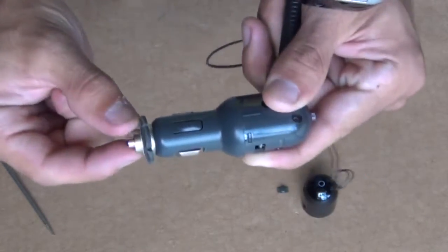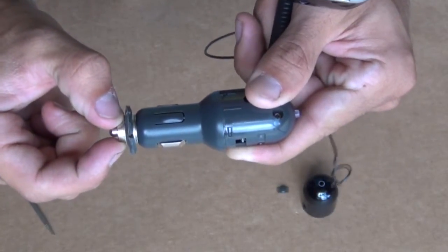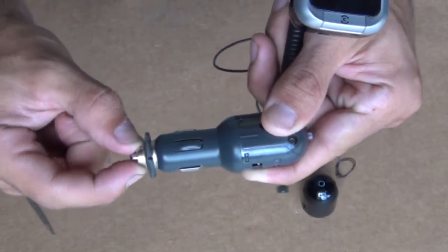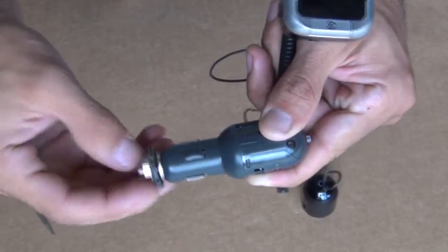Now if it's too tight, there's two flat spots on the threaded portion of this thing that you can put a wrench on if you have to.